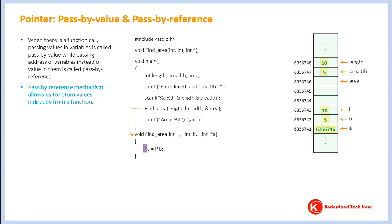Now, where is the variable A pointing at? It is pointing at 6356746. Which is the location having address 6356746? This one. Hence, the value will be stored here. I hope you understand this point. The value will be stored here.